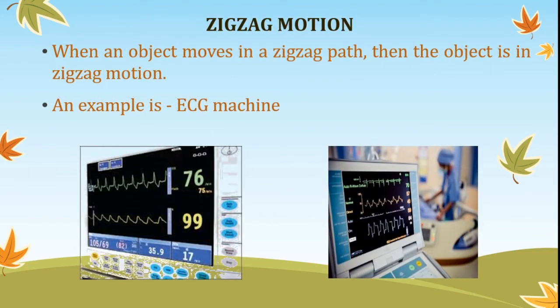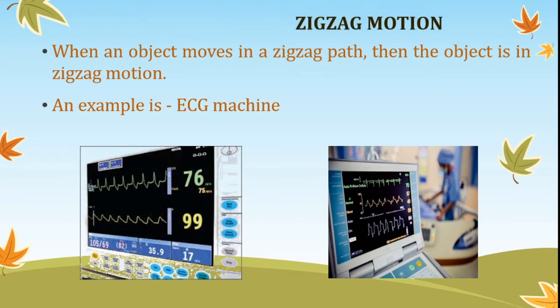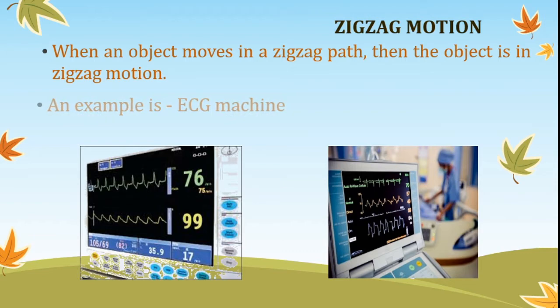Zig-zag motion. An object moving on a zig-zag or improper path is called zig-zag motion. The lines of an ECG machine are an example of zig-zag motion.